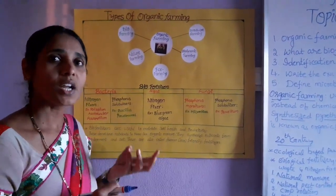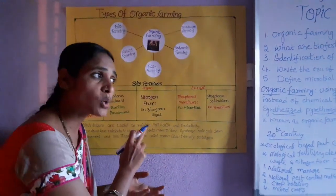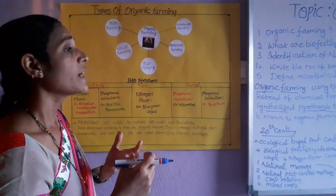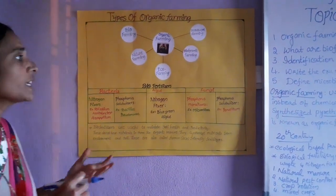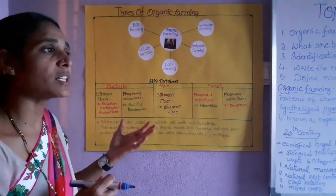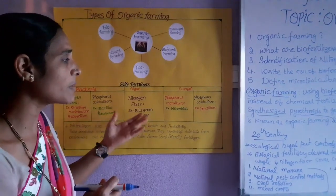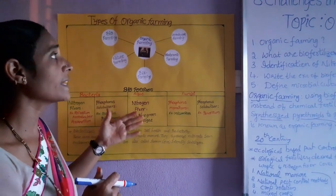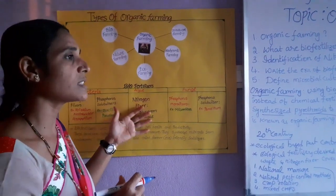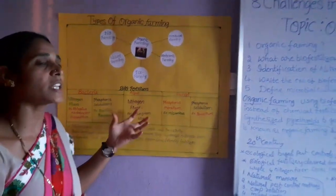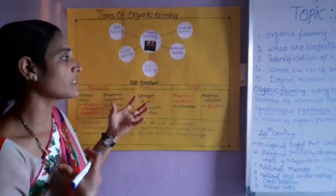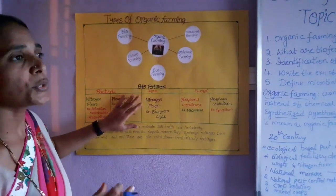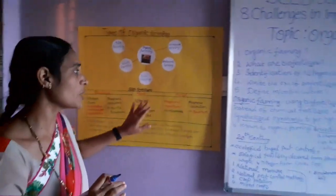Nitrogen-fixing microorganisms are cheap — we cannot buy them; they come only from the soil. These nutrition values are cheap and they are best for setting soil fertility — they add nutrients in the soil, improve water holding capacity, and support soil fertility in an eco-friendly manner.